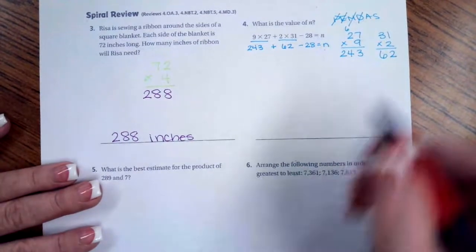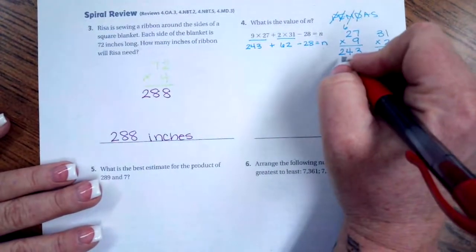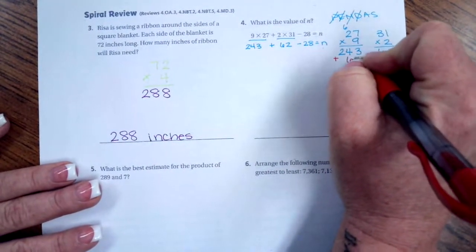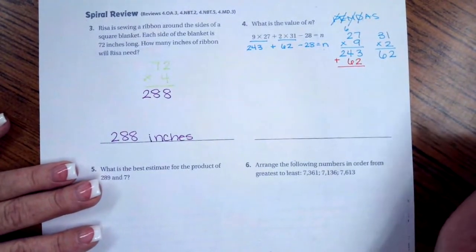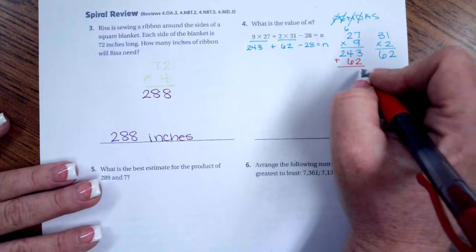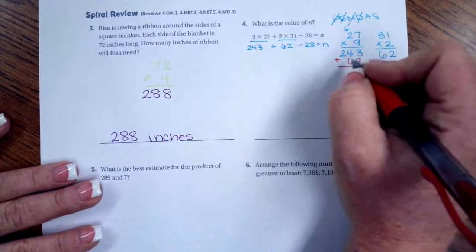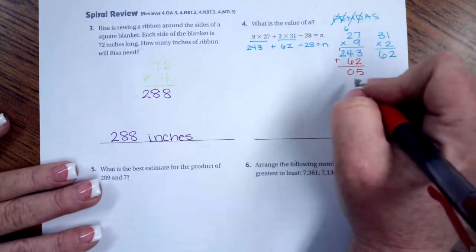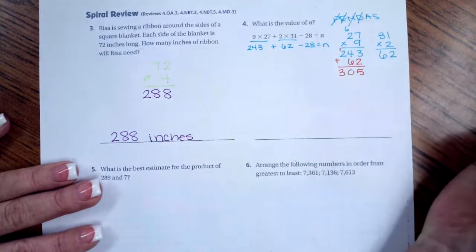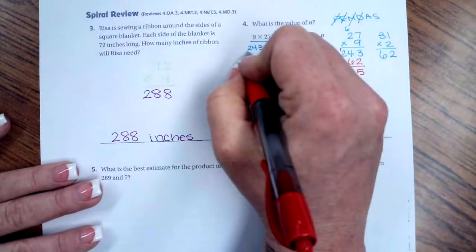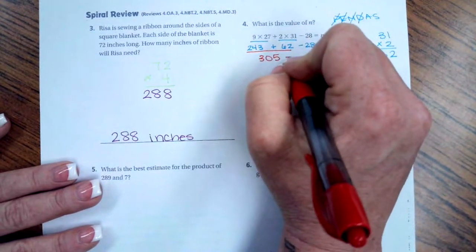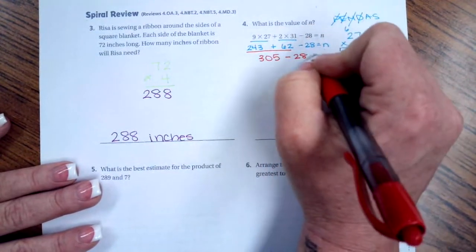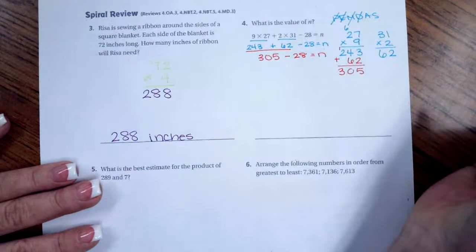So now I need to add these two together. So I'm going to go just to right here. And I'm going to add that 62 right there. Just a little easier than rewriting the whole thing. So 3 plus 2 is 5. 4 plus 6 is 10. Carry that 1. And 1 plus 2 is 3. So now I did this. And I have 305. I still have to take away 28. And it still equals n.